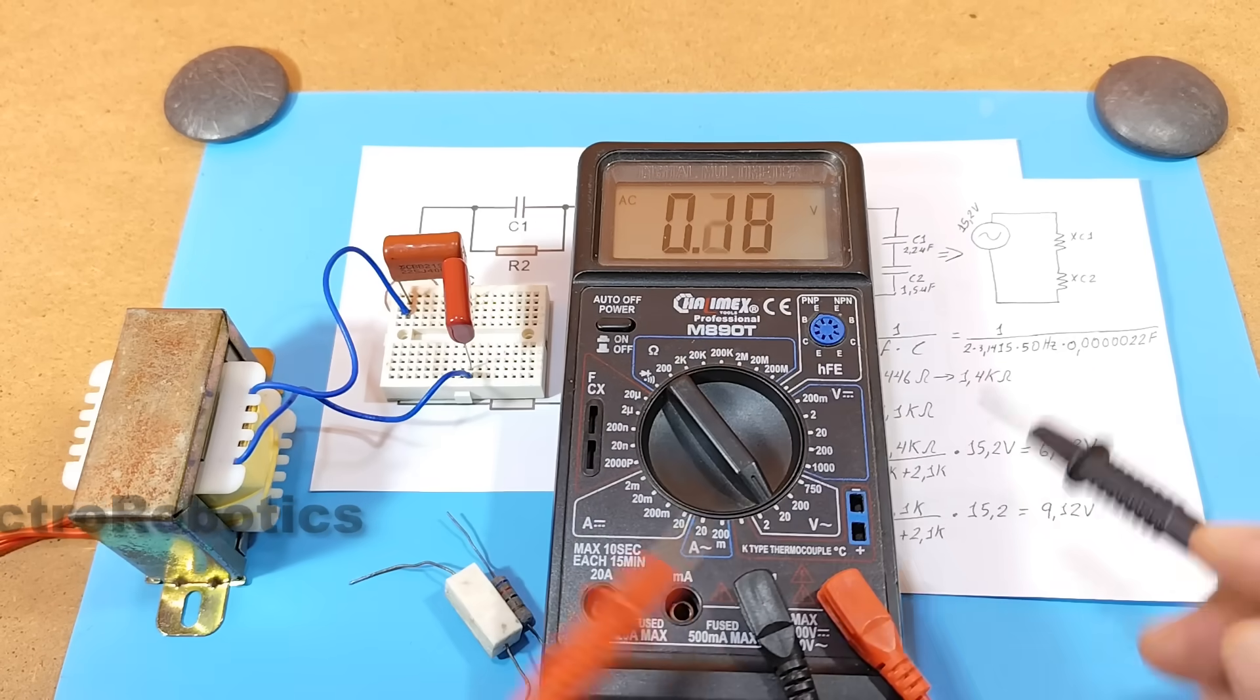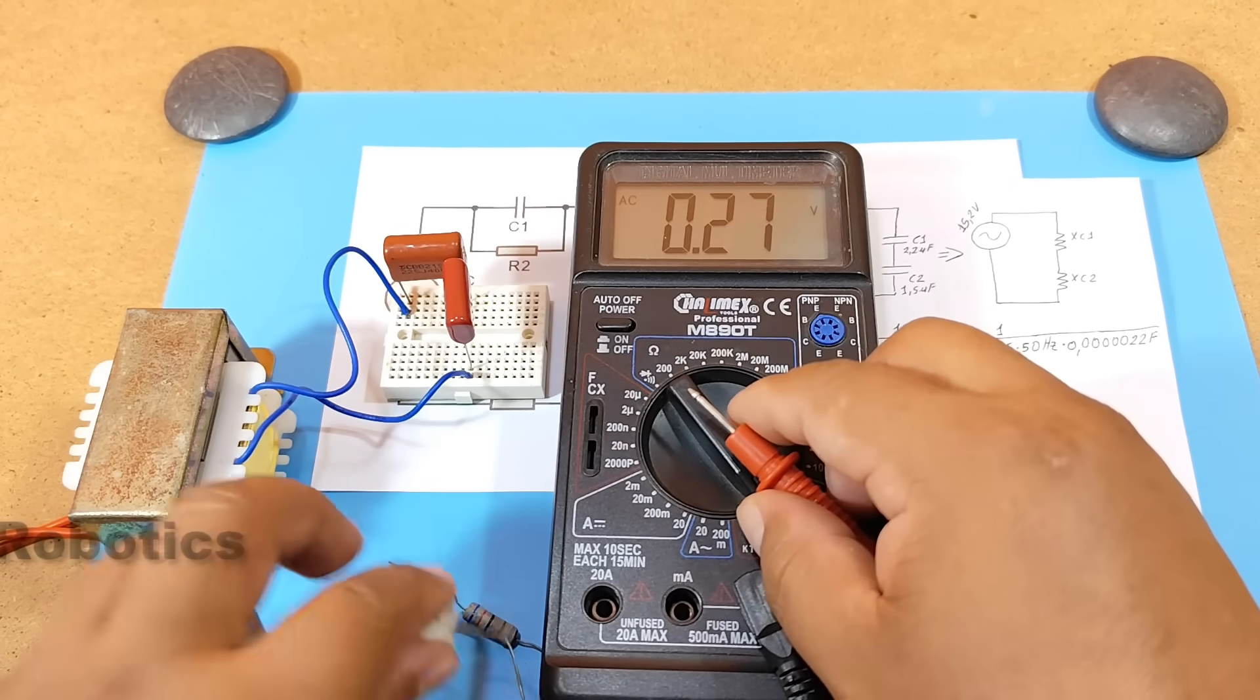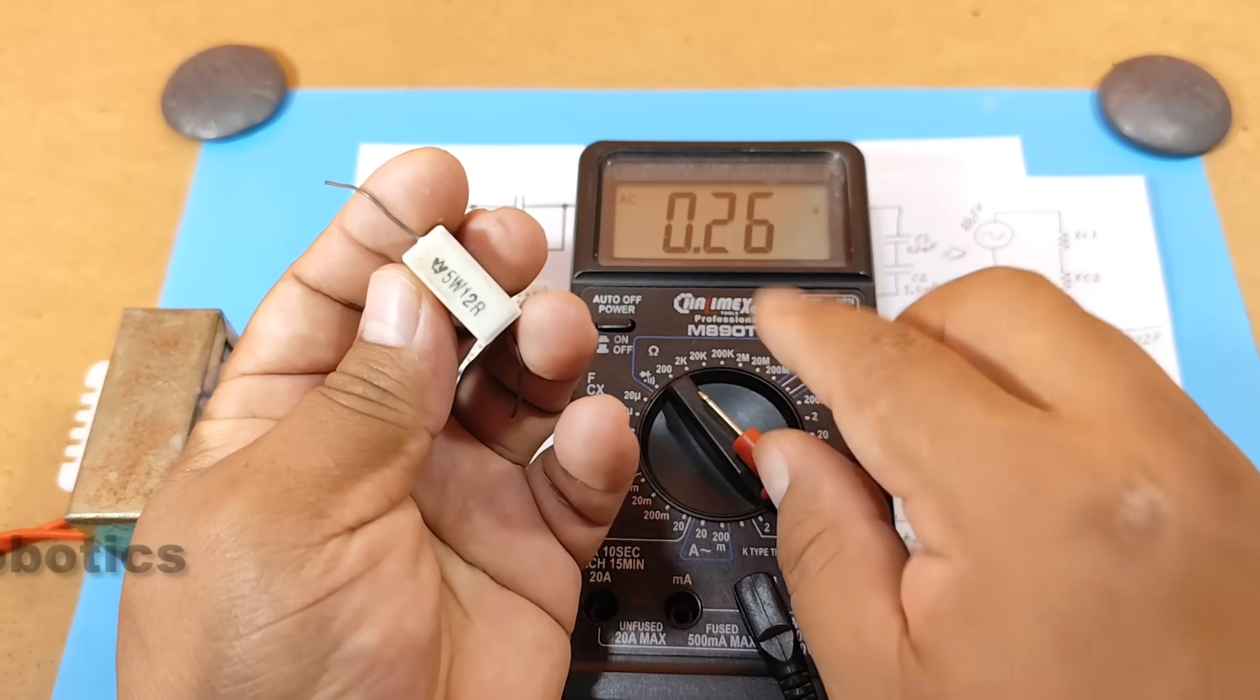Therefore, the calculations are correct, and it's proven that a capacitor works like a resistor when alternating current is applied to it.